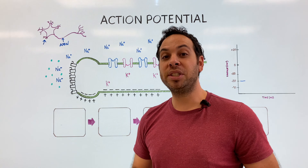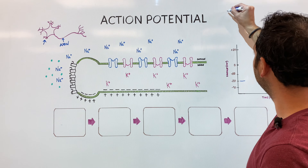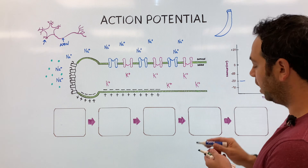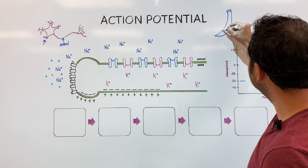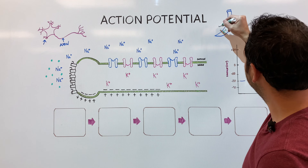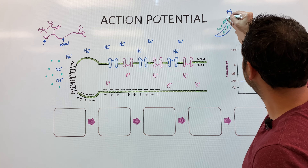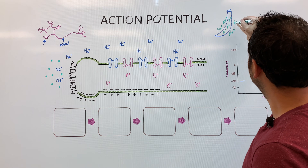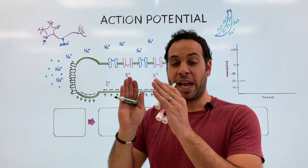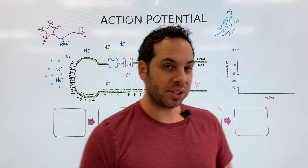Do you remember our memory technique — the salty banana? Potassium is on the inside, and sodium is on the outside. Imagine we're pouring salt all over a banana: salty banana. That's our memory technique. So when a neuron is at rest, not doing anything, we have positive potassium on the inside and positively charged sodium ions on the outside.